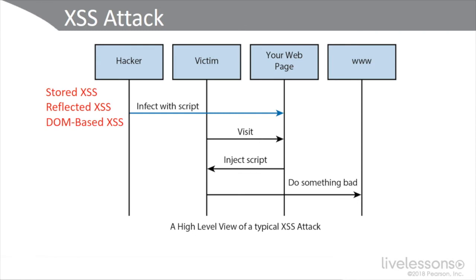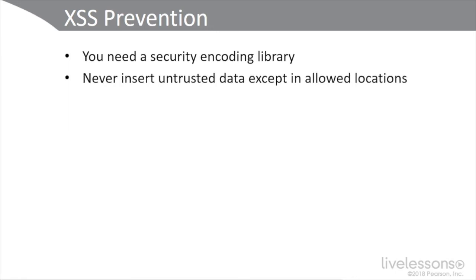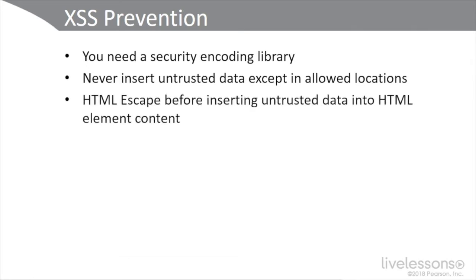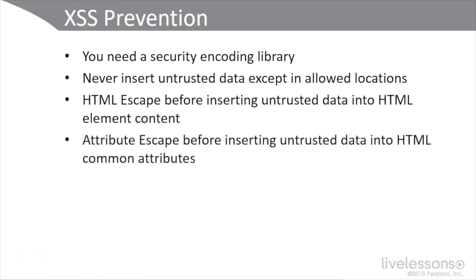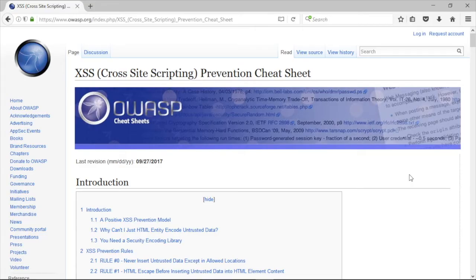Let's look at some of the best ways to countermeasure this common type of attack. According to OWASP, you need a security encoding library, never insert untrusted data except in allowed locations, do an HTML escape before inserting untrusted data into HTML element content, an attribute escape before inserting untrusted data into HTML common attributes, and a JavaScript escape before inserting untrusted data into JavaScript data values.